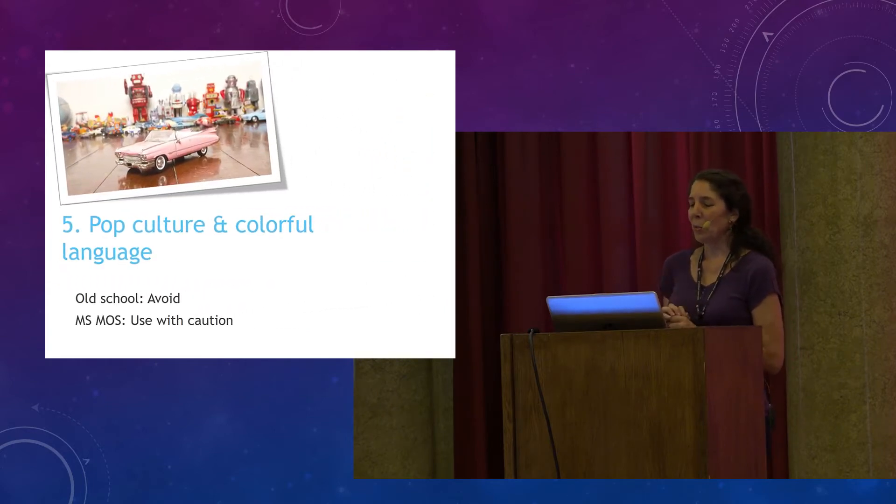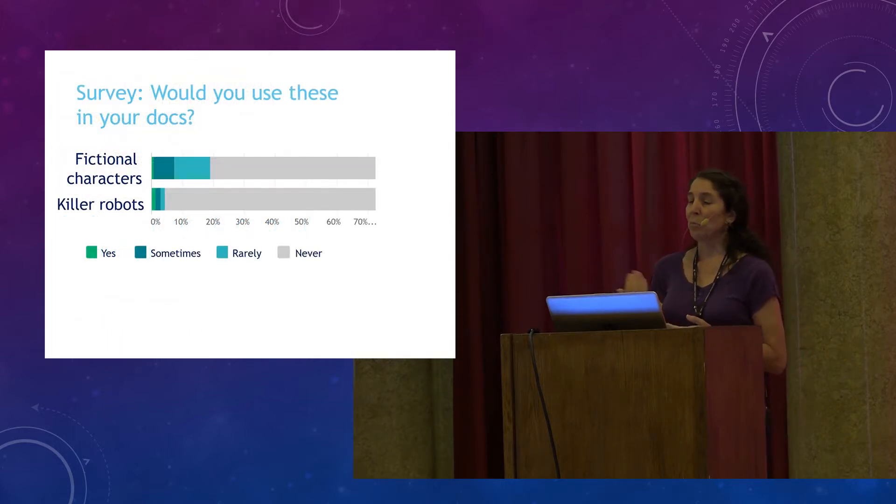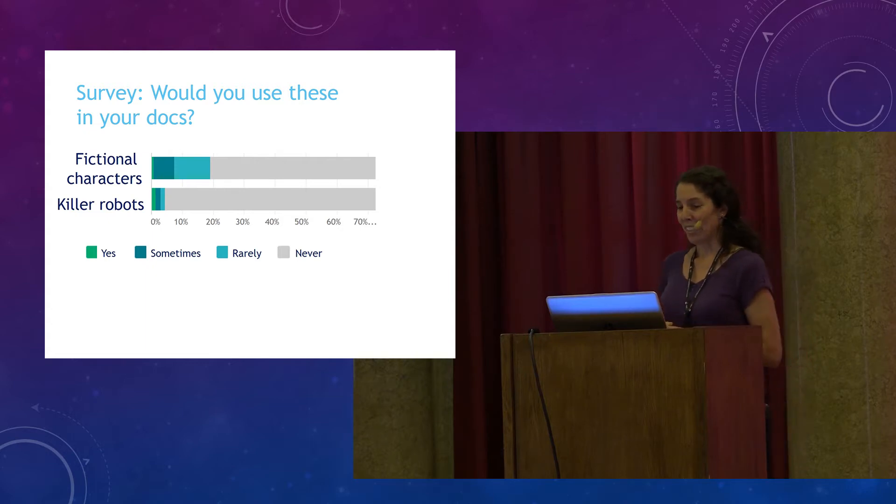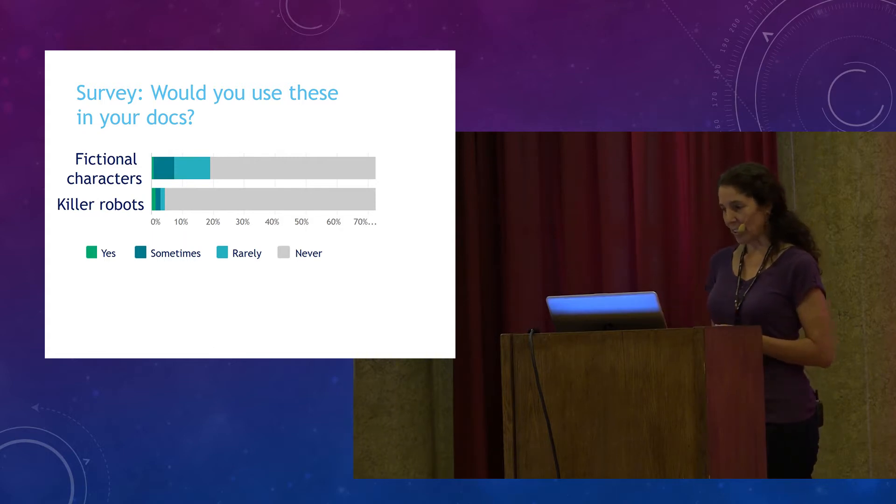Now let's look at pop culture references and some colorful language. The guidance says to avoid such references or use them only with caution. In the survey, more than 80% of respondents said they would never use the examples I gave. Fictional characters or killer robots. And the remaining 20% said they would do so only rarely or sometimes. Very few said they attempt to integrate such references into their docs. However, I did find a few examples.